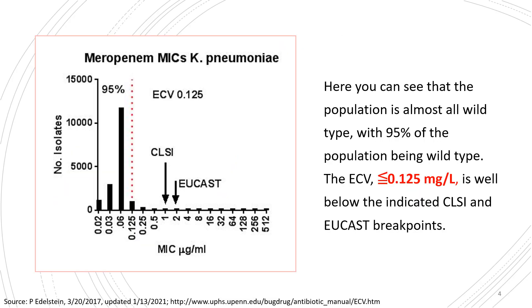Consider a population where almost all isolates are wild type — 95% of the population being wild type. The ECOFF is ≤0.125. The clinical breakpoint S is 1 and ECOFF is a second reference value, so ECOFF may be much less than the clinical breakpoints, and it only tells us whether a resistance mechanism is present or absent.